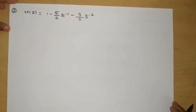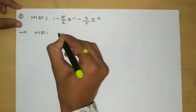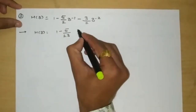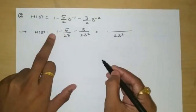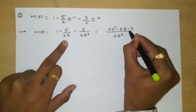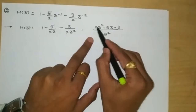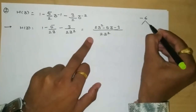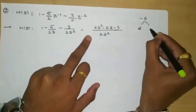Now we will see one more example. The transfer function is H(z) = 1 − (5/2)z⁻¹ − (3/2)z⁻². Simplifying by multiplying through: 1 − (5/2)(1/z) − (3/2)(1/z²). Taking 2z² as the common denominator gives the numerator as 2z² − 5z − 3.